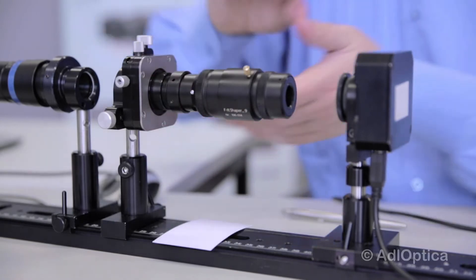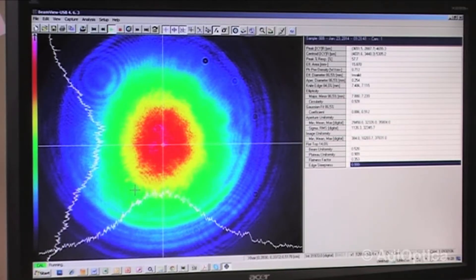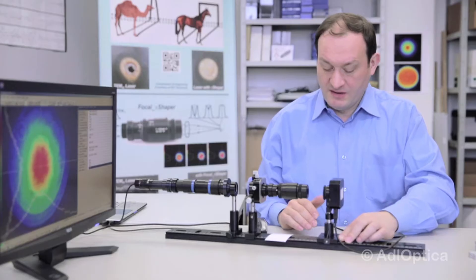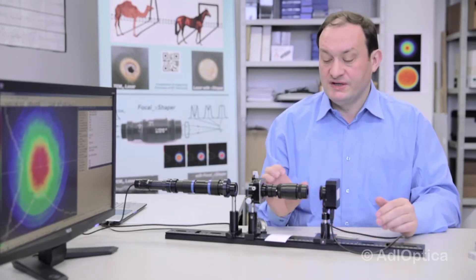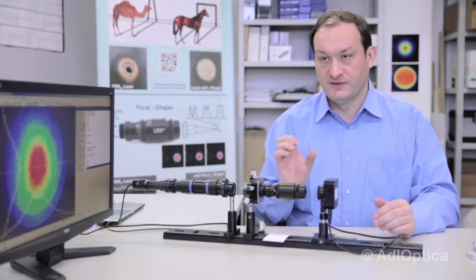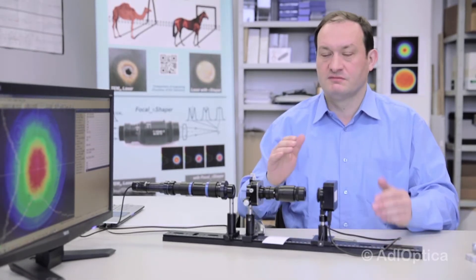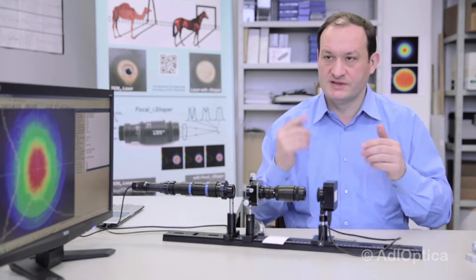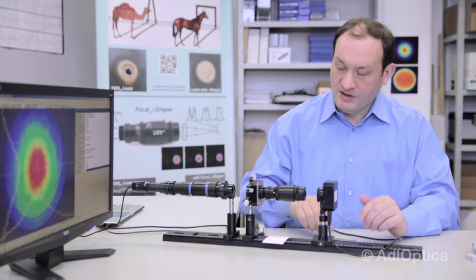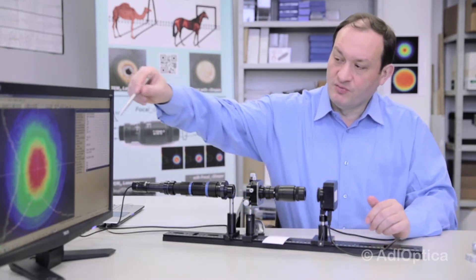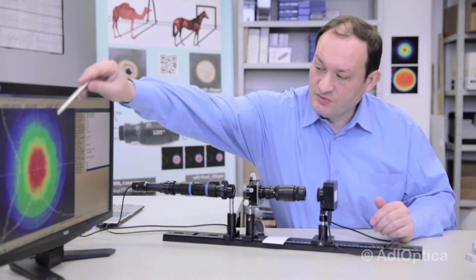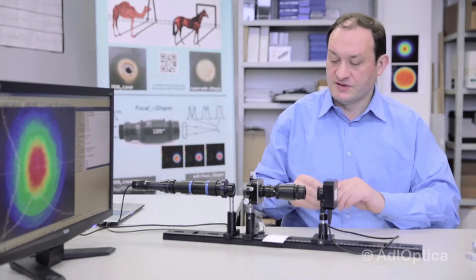And now we can see that there is another view of a pattern after the beam shaper. The feature is that if we want to get flat-top spots in the focal plane, at the output of the beam shaper, we have to provide a so-called airy disk distribution that is specified by a central spot and some rings around. This is what we see on our monitor. The central spot and some rings that are introduced by the beam shaper.